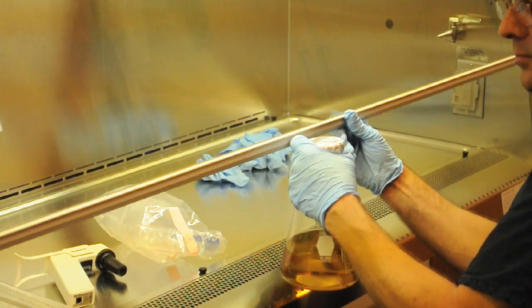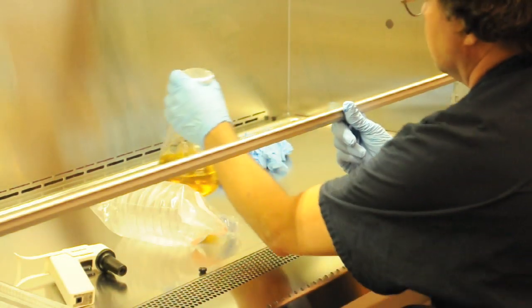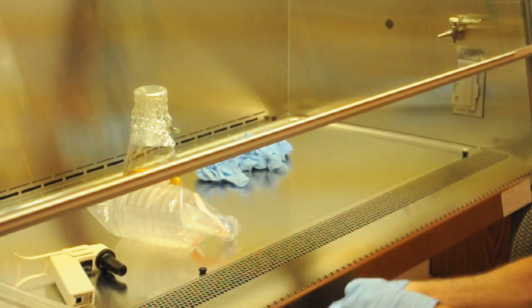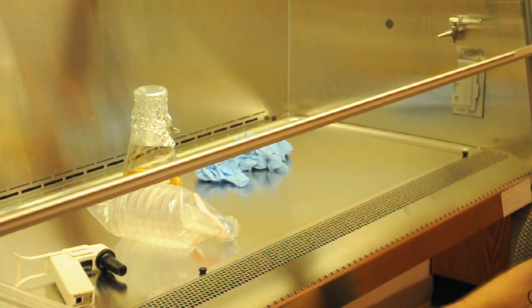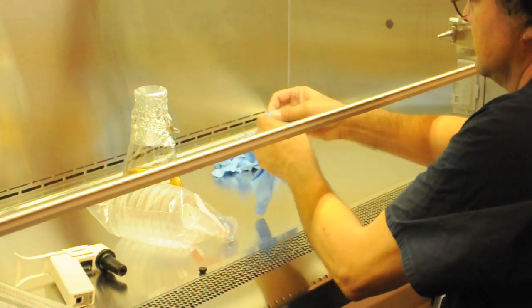We want to sterilize with alcohol the outside of the flask where it's been in the water of the water bath. You don't want to put anything contaminated or it will generate aerosols into the hood. So be sure to clean it with a paper towel soaked in 70% isopropyl alcohol.